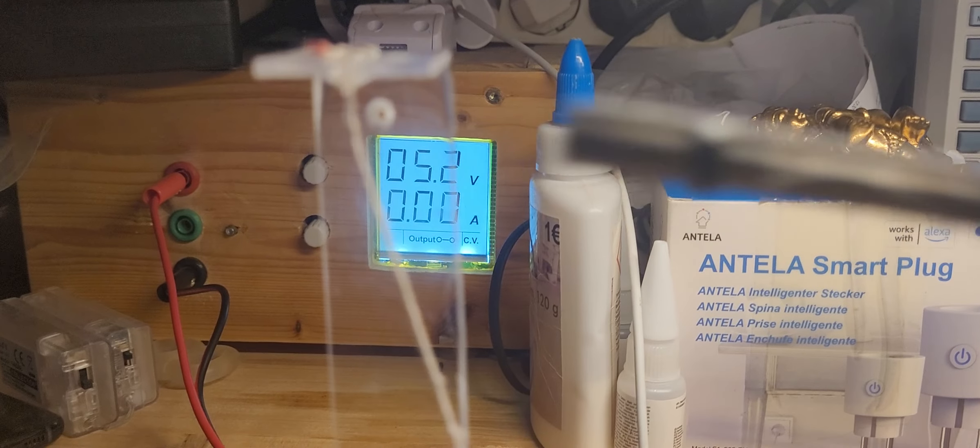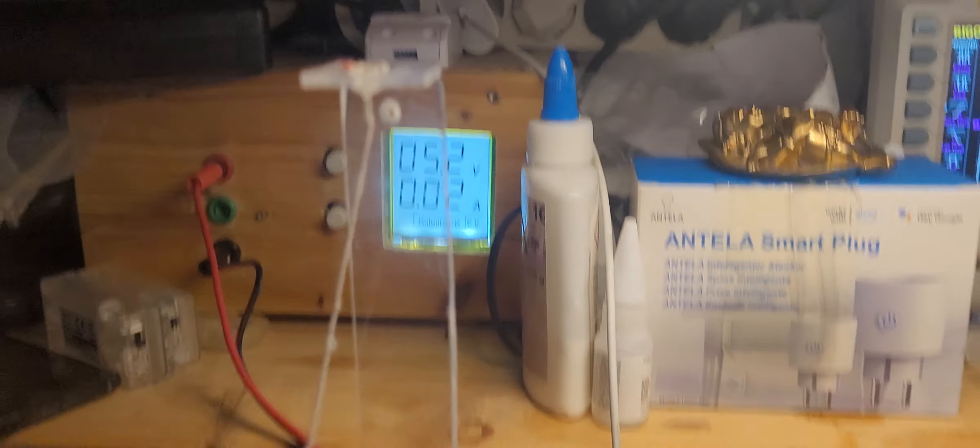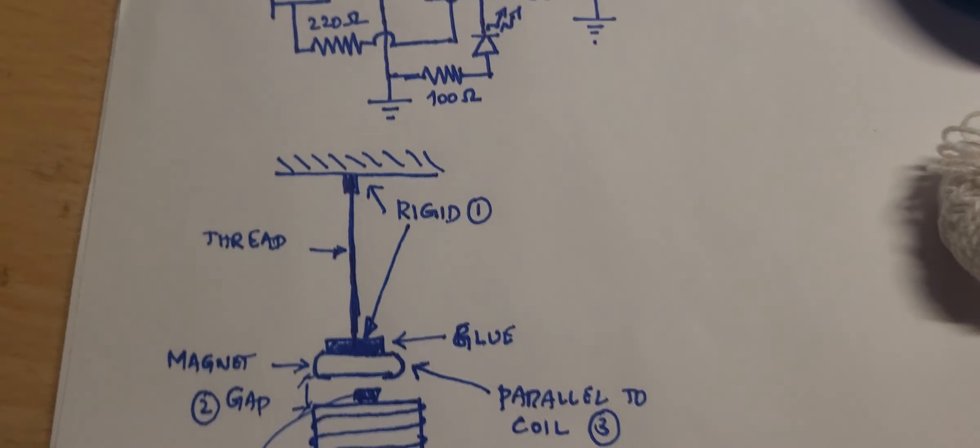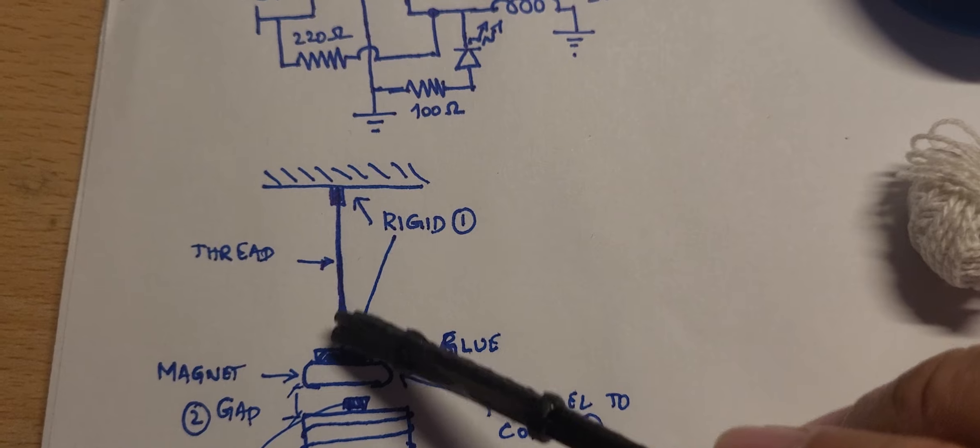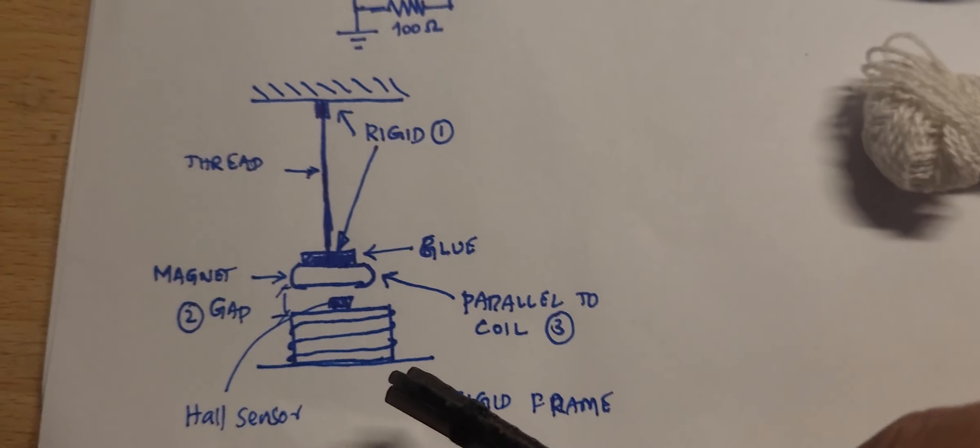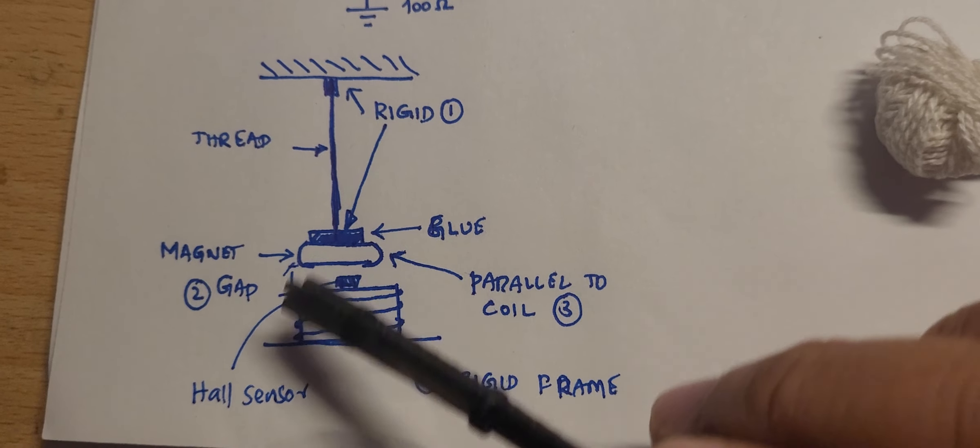It's a bit out of focus but you can see the few millimeters in the beginning is quite rigid. I just used the UV glue and cured it to make it rigid there. This joint at the bottom also should be quite rigid, at least a few millimeters. And the gap between the two has to be optimized.